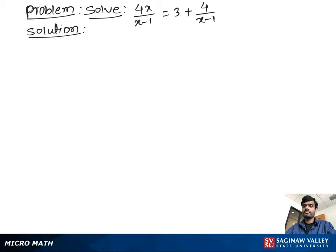Solve 4x over x minus 1 is equal to 3 plus 4 over x minus 1. Let's write the problem again. 4x over x minus 1 equal to 3 plus 4 over x minus 1.